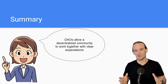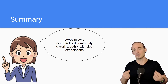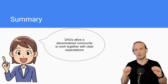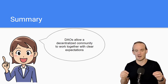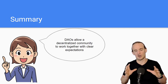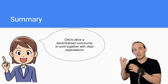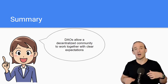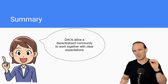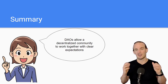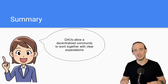I do appreciate you watching this video. This is a beginner-level introduction designed to give you a broad overview of the most important concepts of DAOs. The key takeaway is that a DAO is a decentralized autonomous organization that allows a community to work together with clear expectations of what is going to happen, because everything is governed by smart contracts. Thank you for watching, I hope you got something out of it, and I will see you next time.